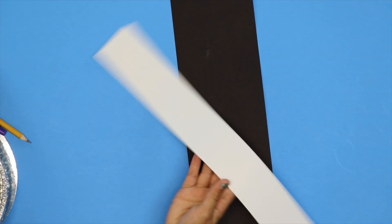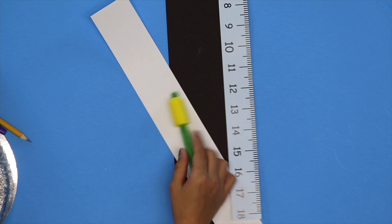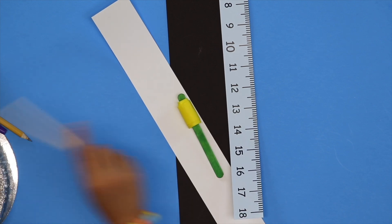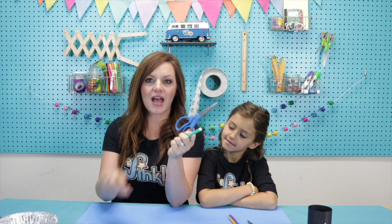All right. Black paper, white paper, 18-inch ruler, tape and a popsicle stick, wooden dowel, tin container, and a lid. On top of everything in our kit, you'll need a pair of scissors and a pencil and/or a marker. And once you have those things, we're ready to get started. Yahoo!